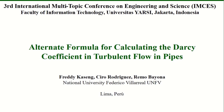In this investigation, the Alternate Formula was compared with two explicit formulas commonly used in pipe design: the Swamee-Jain and Pavlov formulas. To determine which formula is better, all of them were compared with the Colebrook-White formula. For this, the average percentage error and maximum percentage error of the Darcy Coefficient values calculated with each of the explicit formulas were determined with respect to the values obtained with the Colebrook-White formula.